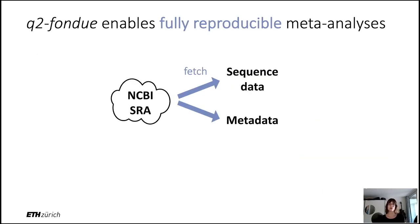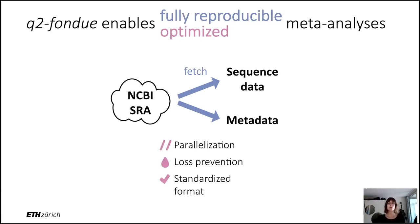The main functionality of Q2Fondue is that it allows you to fetch sequence data and associated metadata from NCBI's Sequence Read Archive. It performs this fetch in a fully reproducible manner, and we also made sure to optimize the download. During the download, we use all available computational cores to parallelize the fetch process, and we also prevent data loss from happening. In addition, we validate and standardize the output formats.